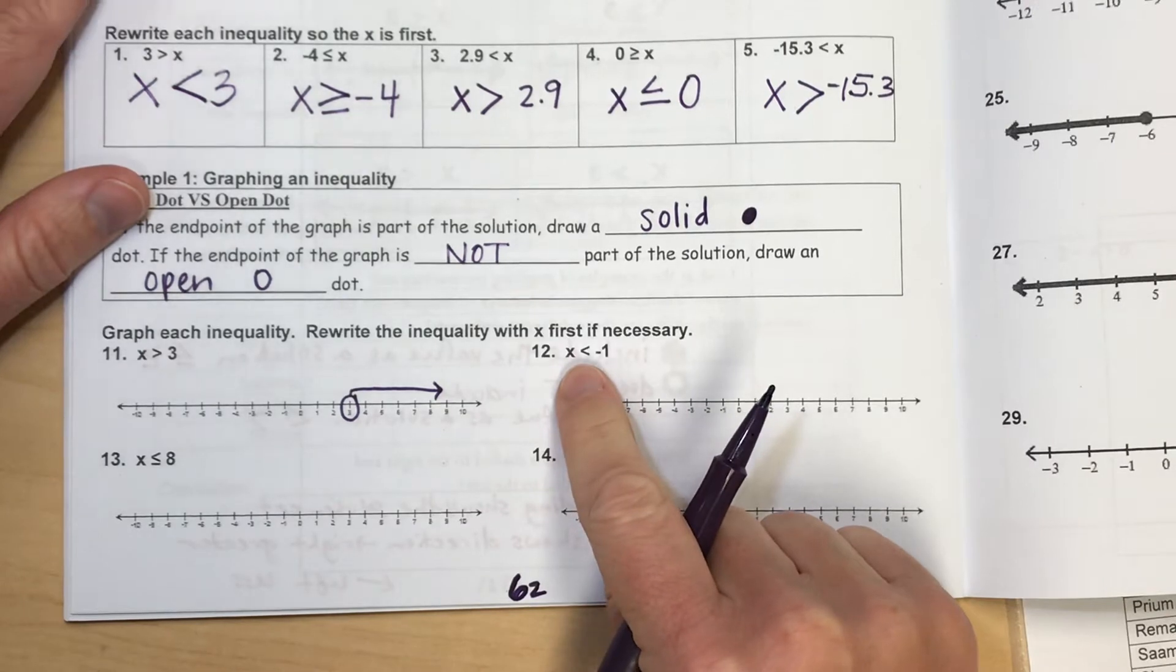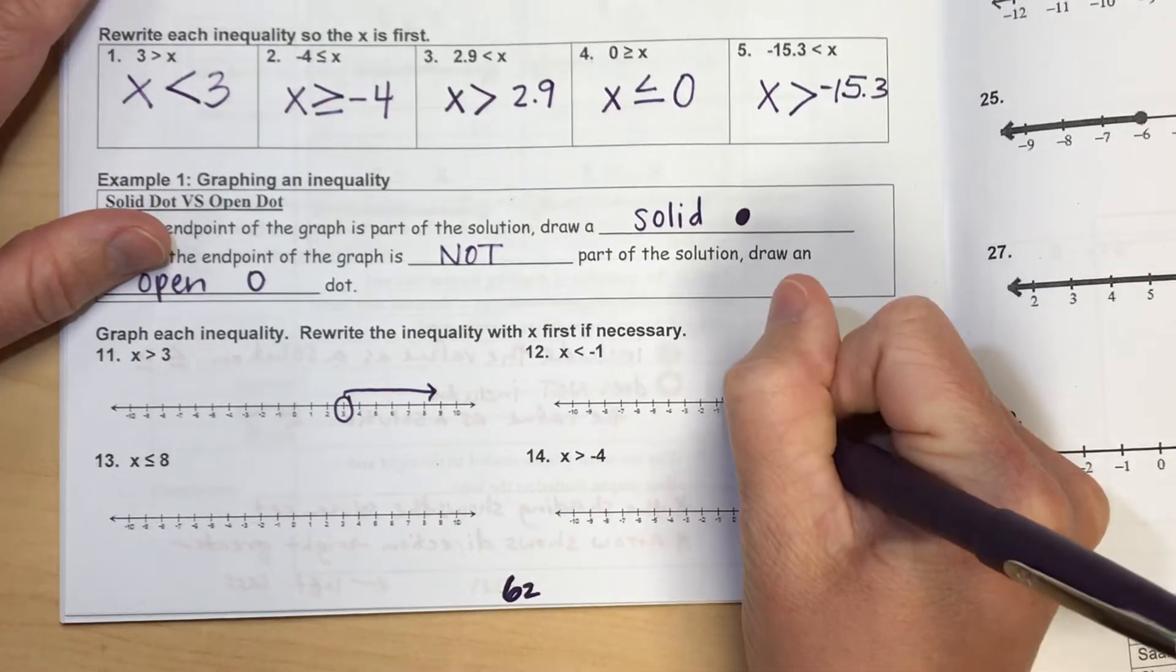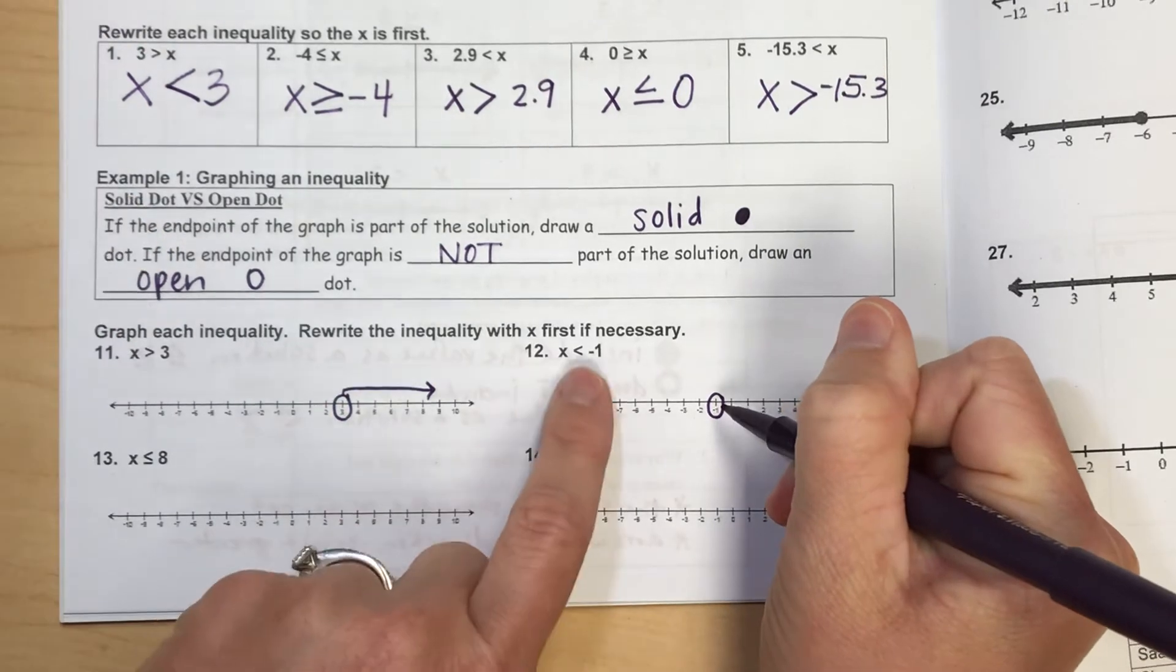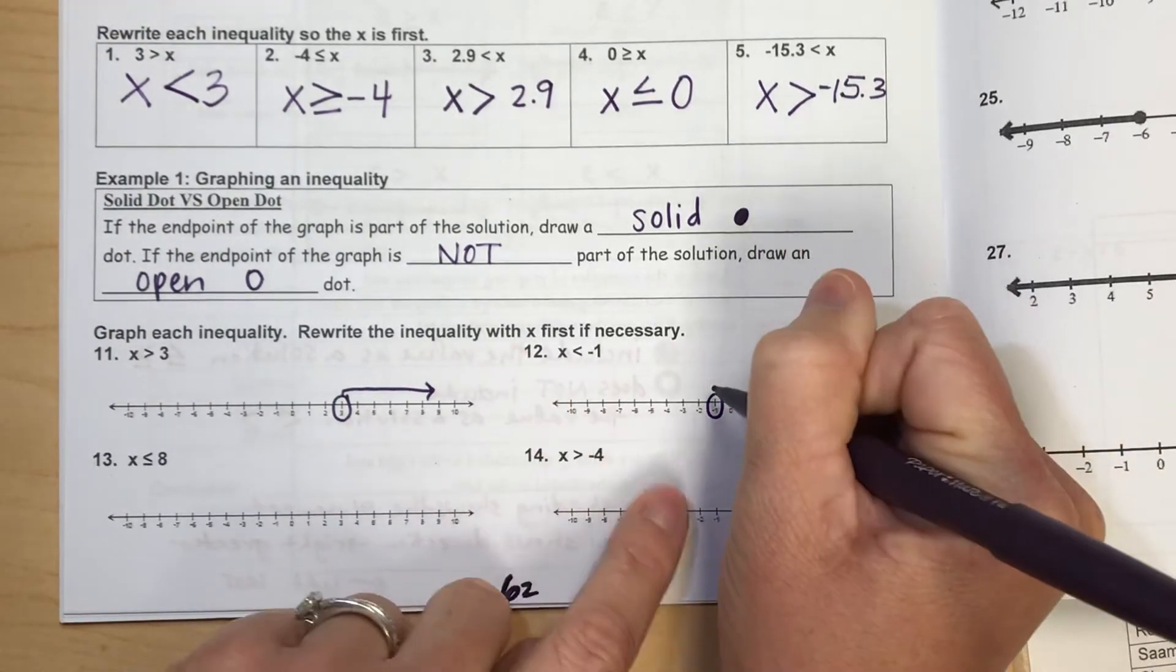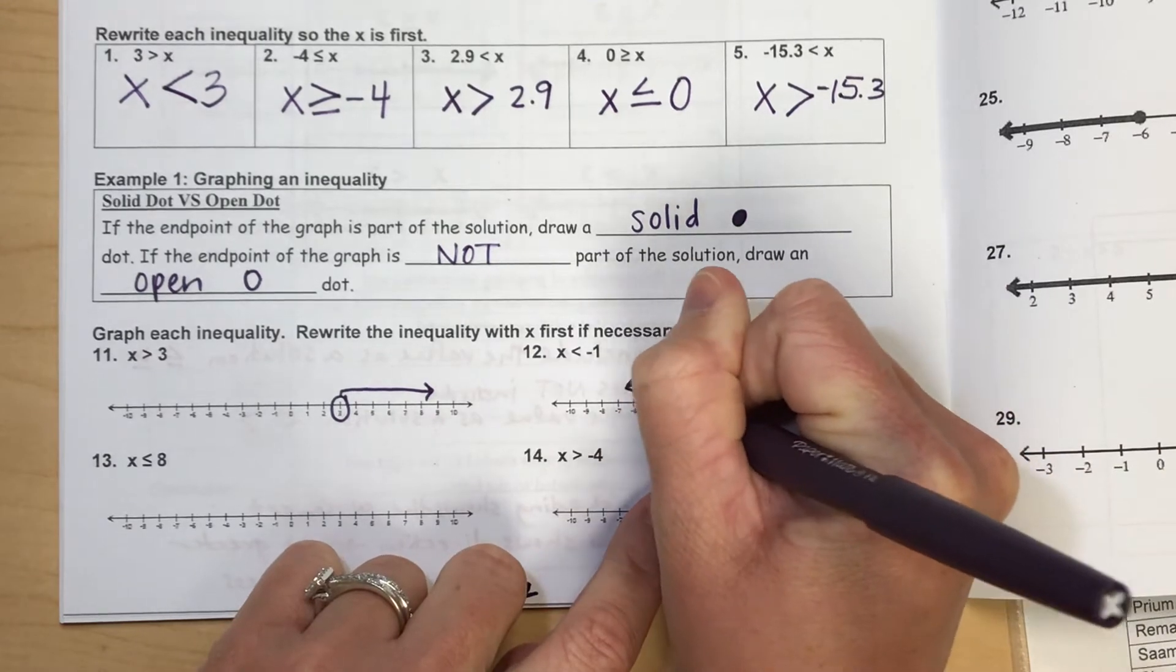For x is less than negative 1, I would find negative 1 on the number line and circle it. Again, it doesn't say equal, so I'm going to leave that open. And less than, the numbers that are smaller go towards the left.